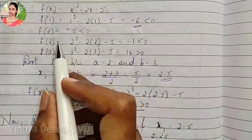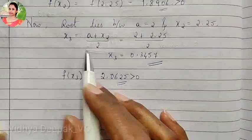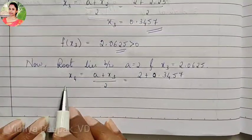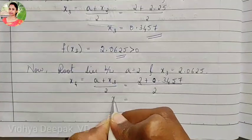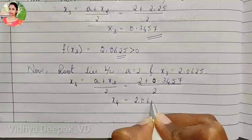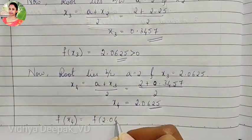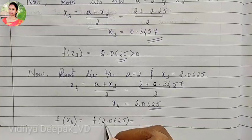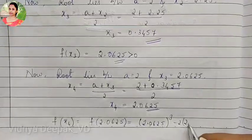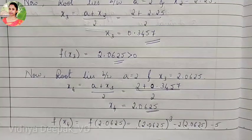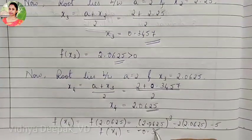The previous negative was f of x, and 2 was a. The root now lies between a and x3, so we find x4 equal to a plus x3 divided by 2, that is 2 plus 2.125 divided by 2, giving x4 equal to 2.0625. Now we find f of x4, which is f of 2.0625: 2.0625 cube minus 2 into 2.0625 minus 5, giving f of x4 equal to minus 0.3513.